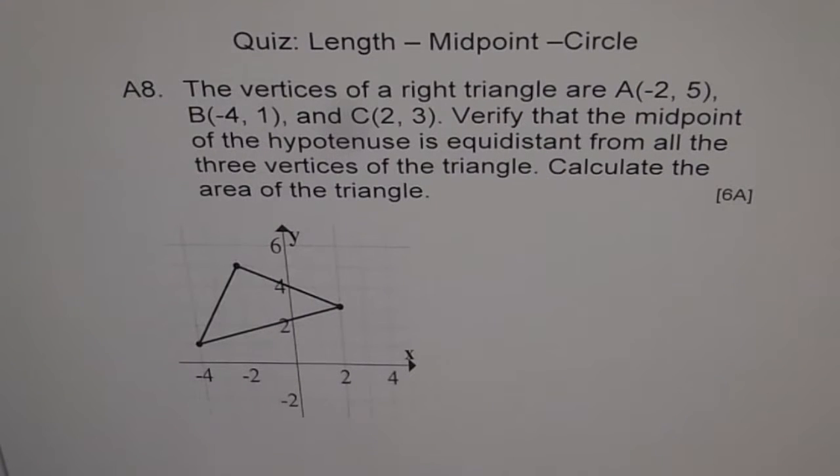A8 is an application problem for length and midpoint. The vertices of a right triangle are A(-2,5), B(-4,1), and C(2,3). Verify that the midpoint of the hypotenuse is equidistant from all three vertices of the triangle. Calculate the area of the triangle. This is a very interesting problem and it is kind of important also.